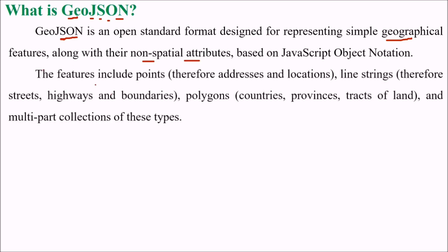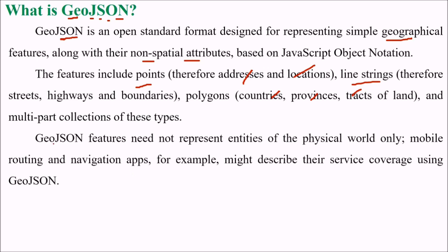The features we are talking about include addresses, locations, line strings, and points. Line string means streets, highways, boundaries, and polygons like countries, provinces or tracts of land, as well as multi-part collections of these types.